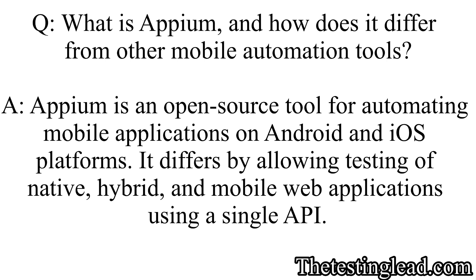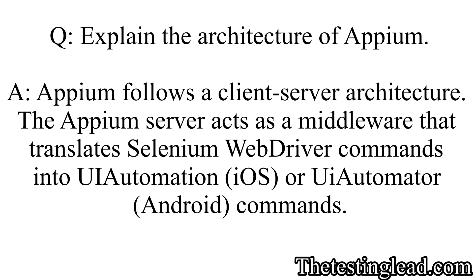What is Appium and how does it differ from other mobile automation tools? Appium is an open source tool for automating mobile applications on Android and iOS platforms. It differs by allowing testing of native, hybrid, and mobile web applications using a single API.